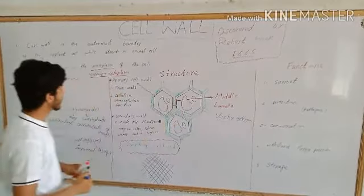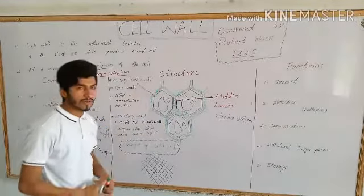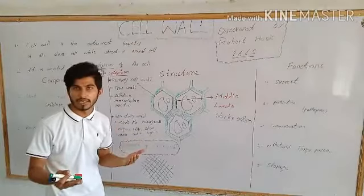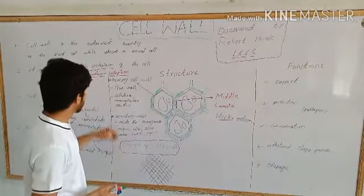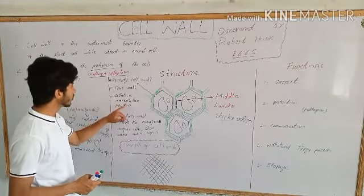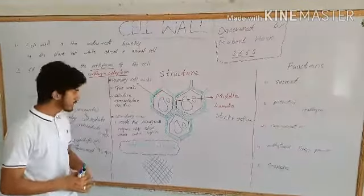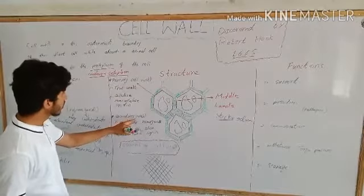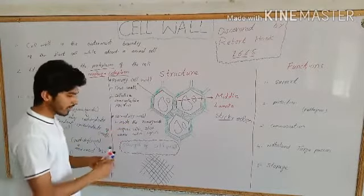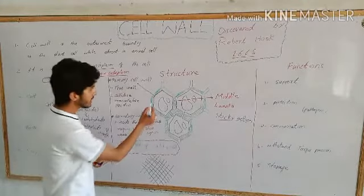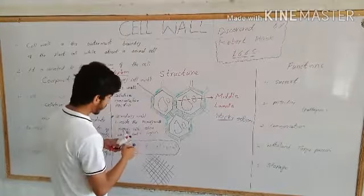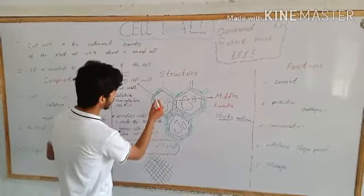This is the primary cell wall, which contains hemicellulose and pectin. The primary cell wall is the innermost layer.